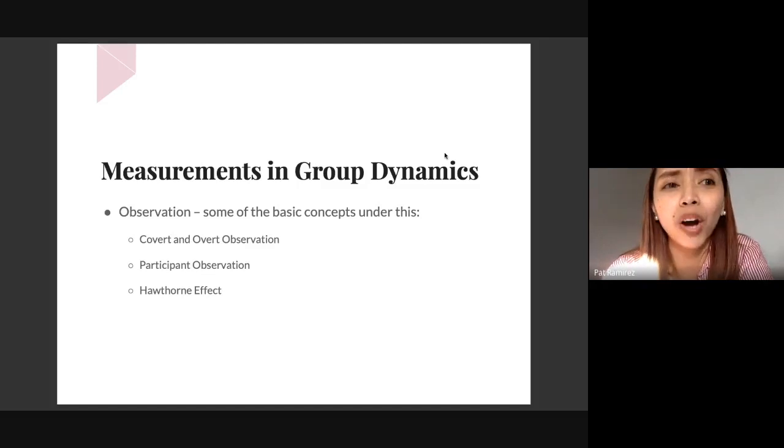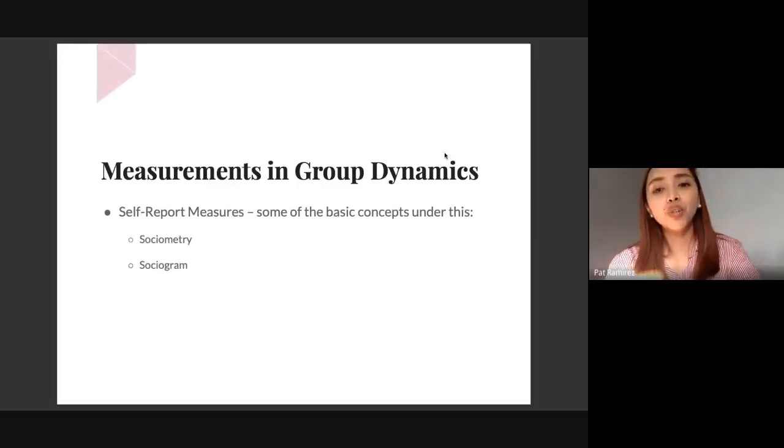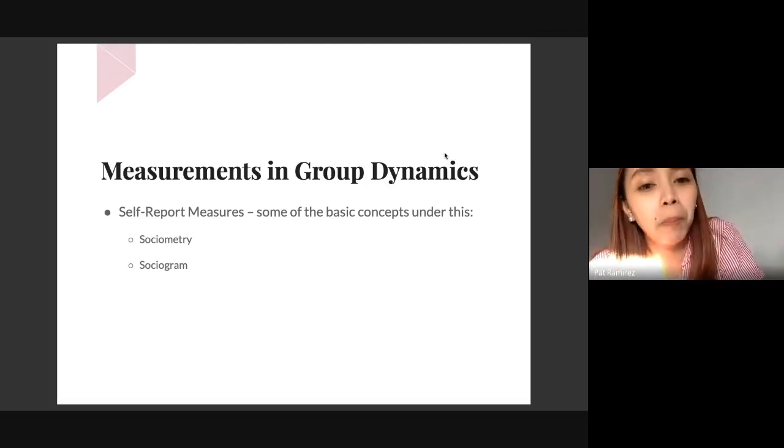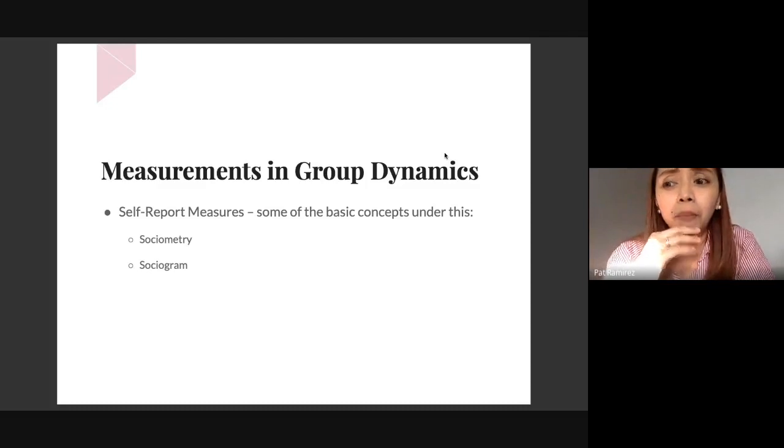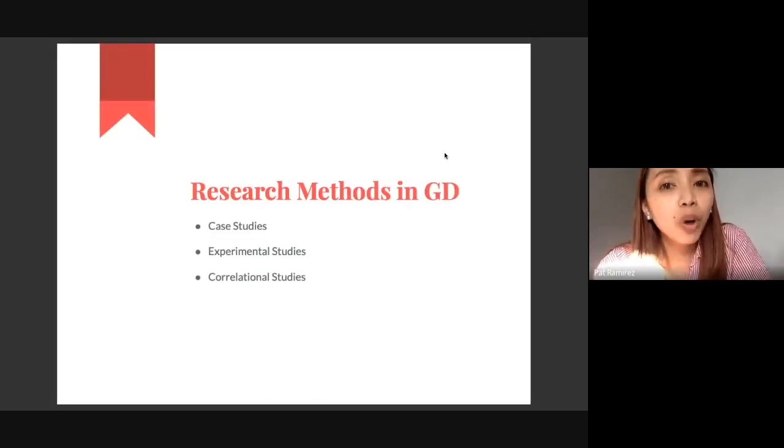In experimental psychology and psych assessment later on, even in IO, you would come across the concept of Hawthorne effect. For those who forgot even though we're in experimental mode, the Hawthorne effect is how people would be different in terms of how they react or respond just because they know they are being observed. We sometimes could also measure behavior in groups using self-report measures - concepts like sociometry, sociogram, letting them answer surveys or psychological tests where they themselves identify and answer.